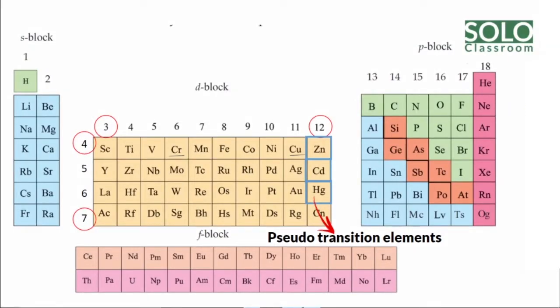D Block elements are on the left side of the S Block and the right side of the P Block, spanning from Group 3 to Group 12.